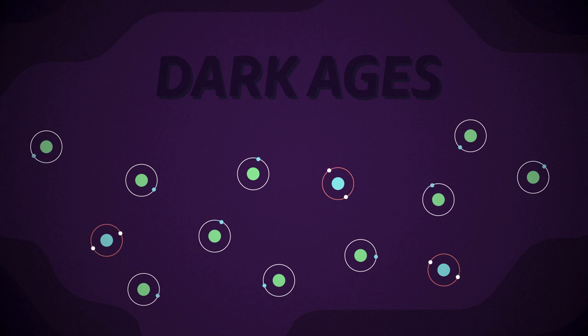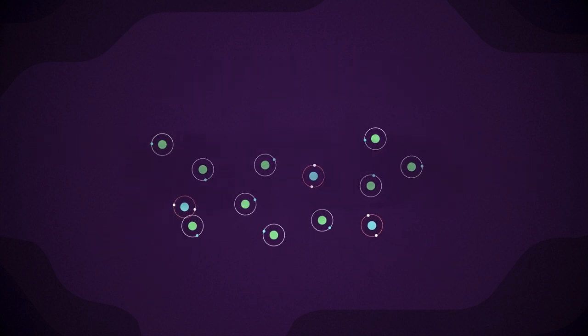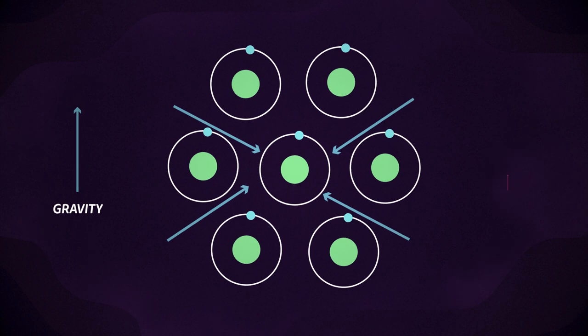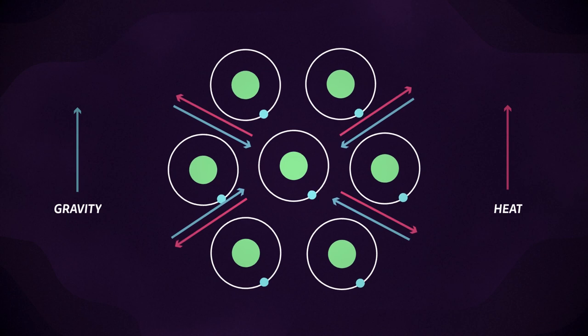Over millions of years, gravity slowly took effect on these atoms and they started to clump together to form clouds of gas. As gravity was pulling the atoms closer together, the heat generated by this was counteracting gravity, stopping the state getting any denser.